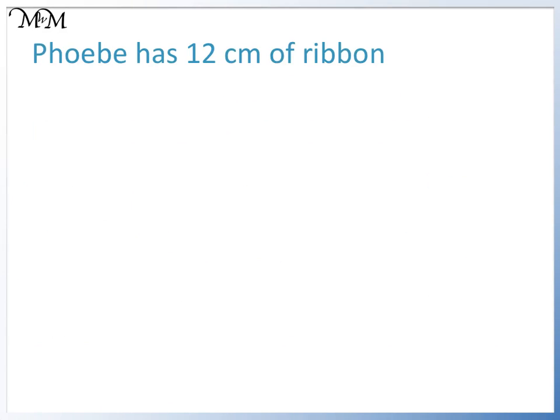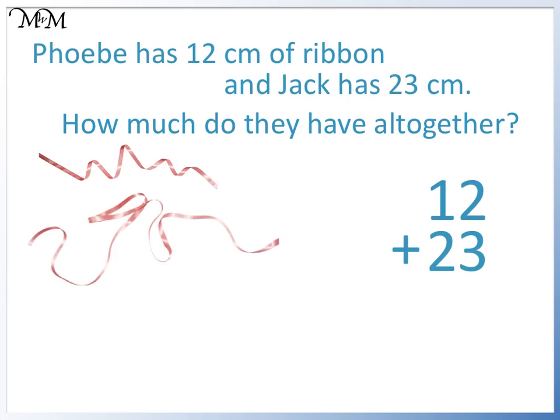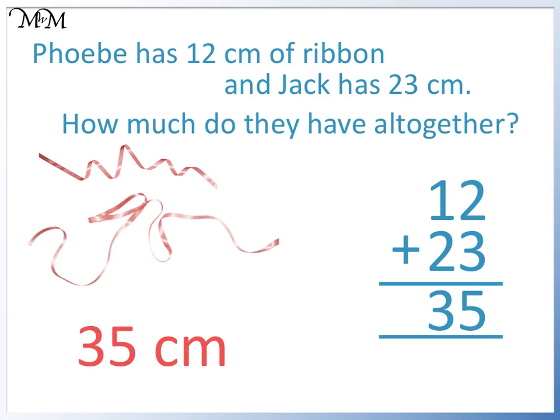Phoebe has 12 centimetres of ribbon and Jack has 23 centimetres. How much do they have altogether? Here is 12 and here is the extra 23. To find how much they have altogether, we add these amounts. 2 plus 3 equals 5 and 1 plus 2 equals 3. 12 centimetres plus 23 centimetres equals 35 centimetres altogether.